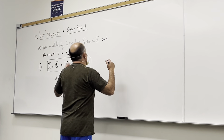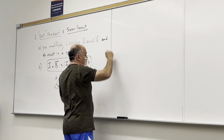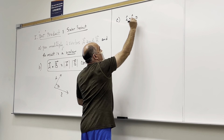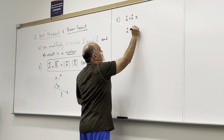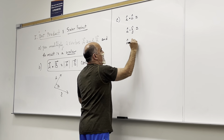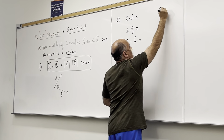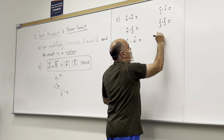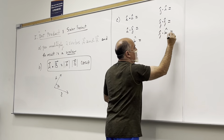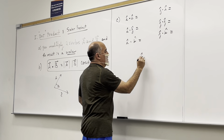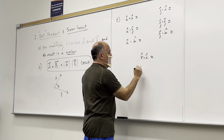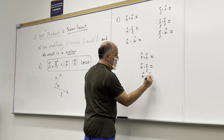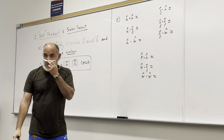Now, for unit vectors: how much is i-hat dot i-hat? i-hat dot j-hat? i-hat dot k-hat? What about j-hat dot i-hat, j-hat dot j-hat, j-hat dot k-hat? And then k-hat dot i-hat, k-hat dot j-hat, and k-hat dot k-hat?